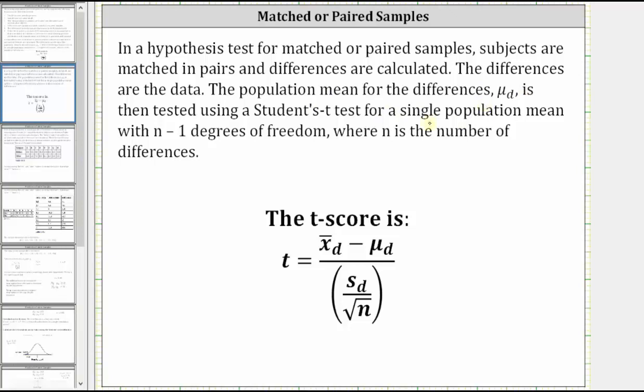So the test statistic is a t-score given by the formula shown here below. Let's take a look at an example.